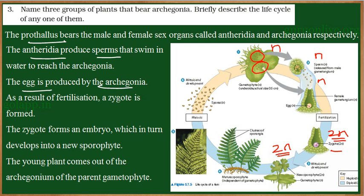So in every generation, one generation will be diploid in nature and the other will be haploid in nature. This kind of life cycle is called alternation of generations. The zygote develops into a new sporophyte, which contains sporangia and produces spores, and this repeats. In ferns, the sporophyte is the major, dominating plant body while the gametophyte is short-lived.